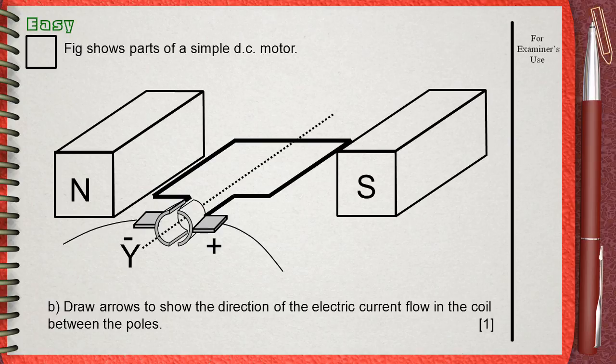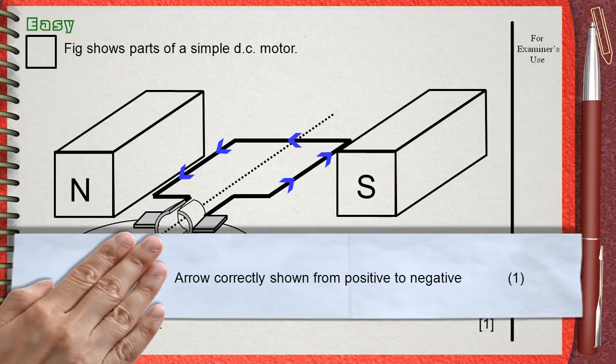Doesn't look like an electric motor question. Electric current simply flows from positive to negative. So this is how we will draw our arrows. The mark scheme awards one mark for arrows correctly shown from positive to negative.